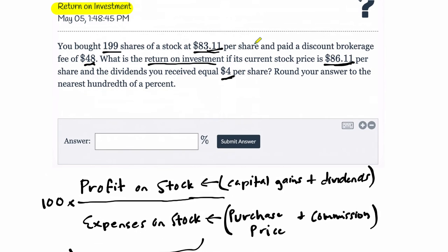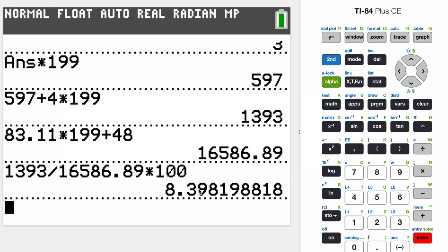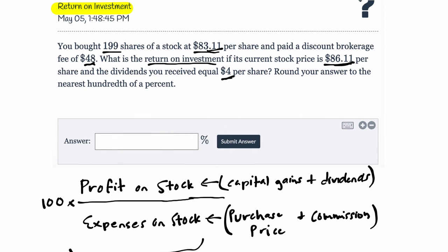So in this case, I would just enter that number 8.40 or 8.4%. I'll put it this way. 8.4%. All right. I hope that helped.